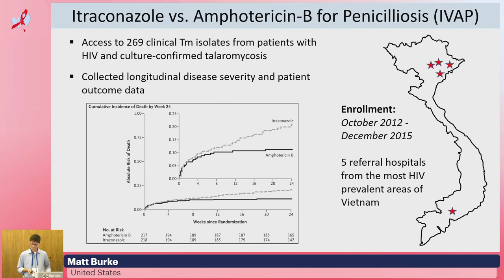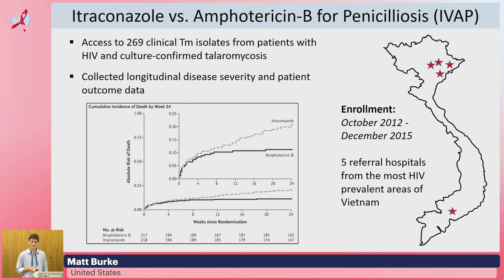Just a little bit about our cohort: we had access to 269 clinical TM isolates from patients with HIV and culture-confirmed talaromycosis. These patients participated in our itraconazole versus amphotericin B for penicillosis trial, or IVAP. Penicillosis is the same as talaromycosis these days. We collected longitudinal disease severity and patient outcome data over the course of the study, and patients were enrolled in five hospitals in Vietnam from the most HIV-prevalent areas.